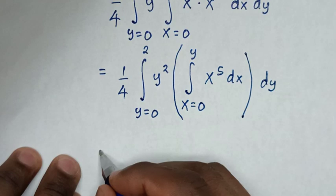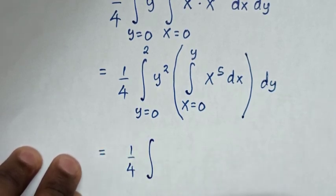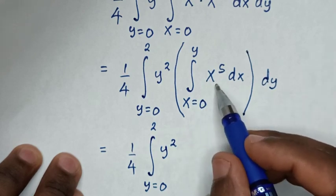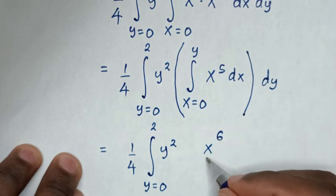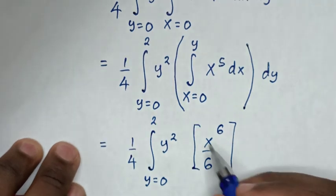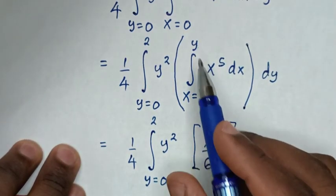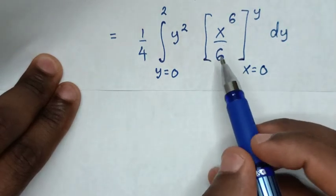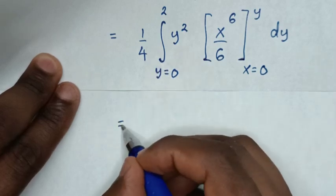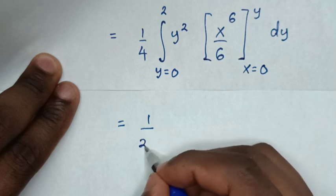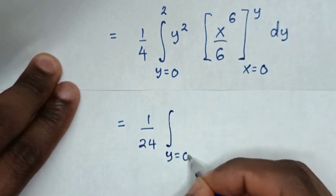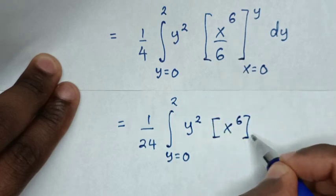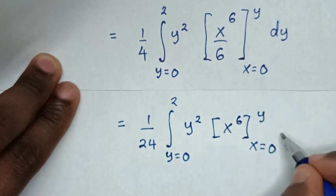Then in the next step: it will be equal to 1/4, then integral from y equals 0 up to 2, y², then we integrate x⁵ with respect to x. So x⁵ becomes x⁶ over 6, with the limit from x equals 0 up to y, then dy. Taking 1/6 outside gives 1 over 4 times 6, which is 1/24, then integral from y equals 0 up to 2, y², x⁶ evaluated from x equals 0 up to y, then dy.